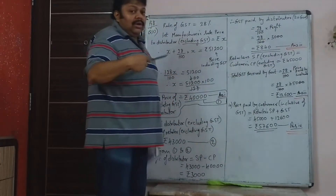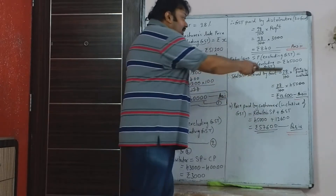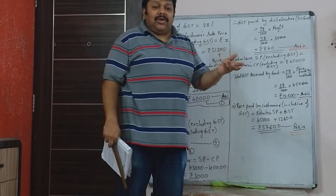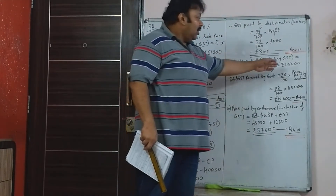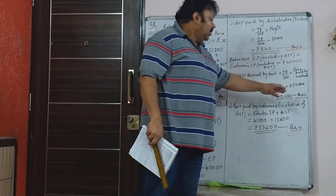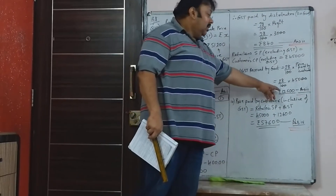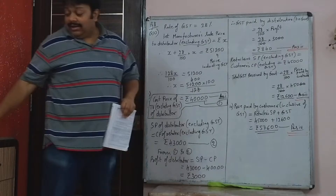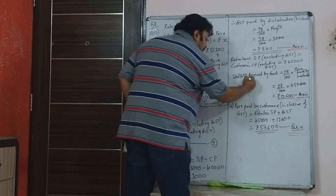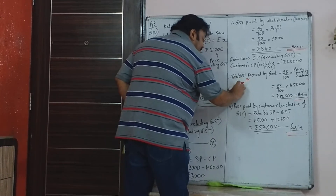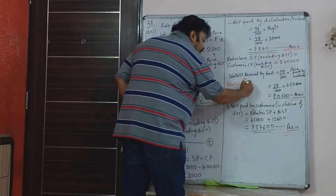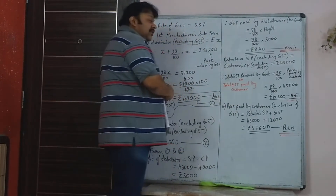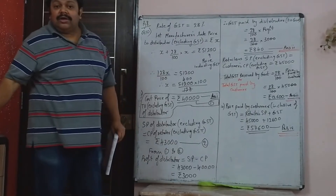So if you and I go to the shop to buy this television, we have to pay 28% on Rs. 45,000. Because for us, it is not the profit on which we are going to pay — we are not selling it to someone. So 28% of 45,000 is Rs. 12,600, which will be the total GST paid by the customer, and that is the GST received by the government. That is answer 3.